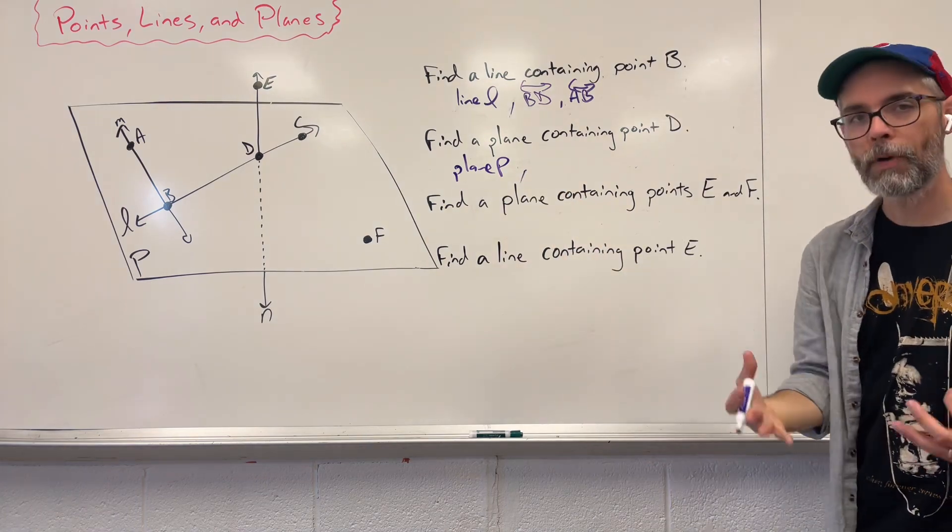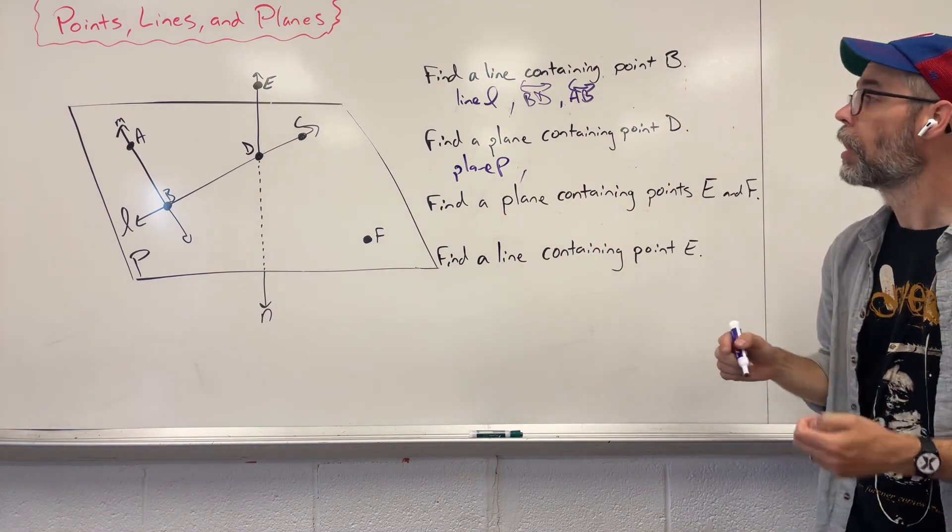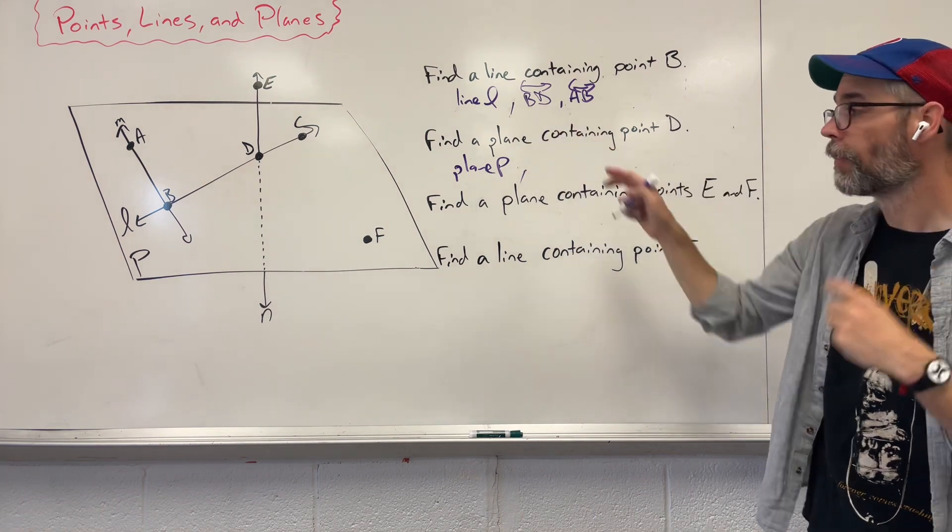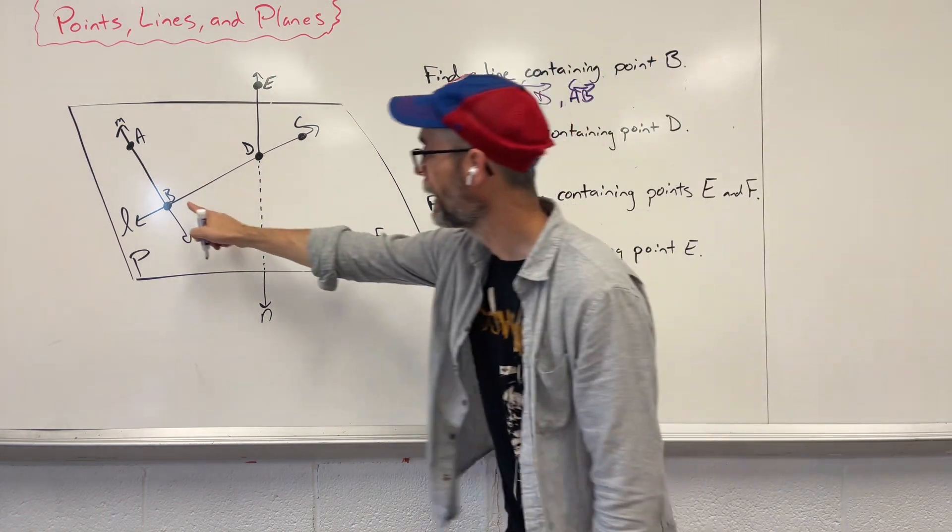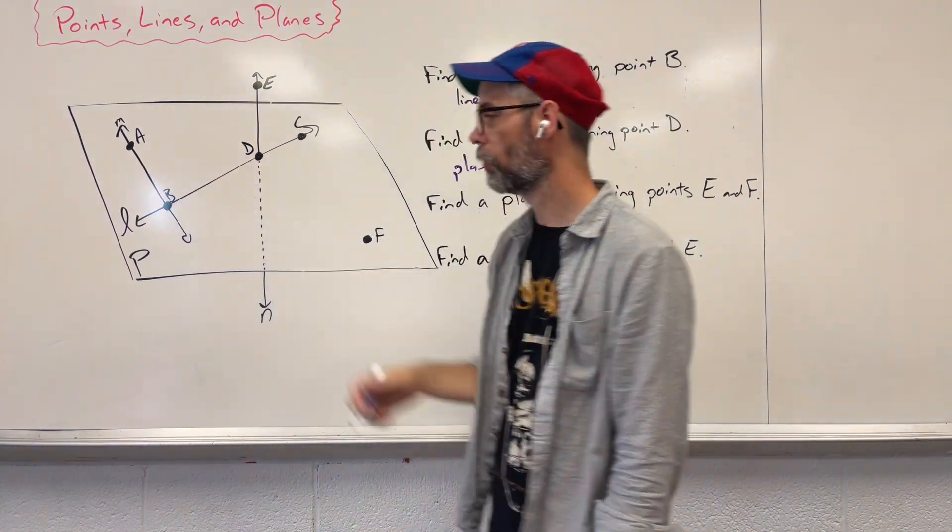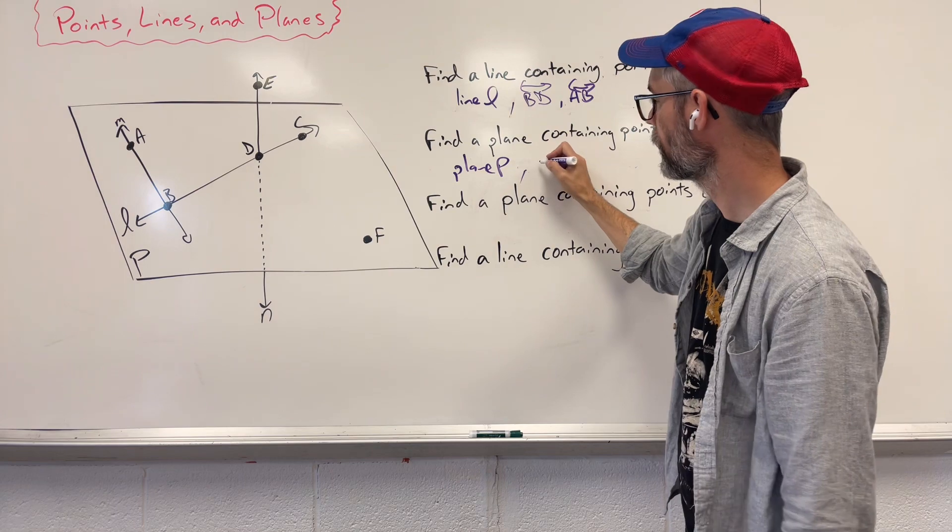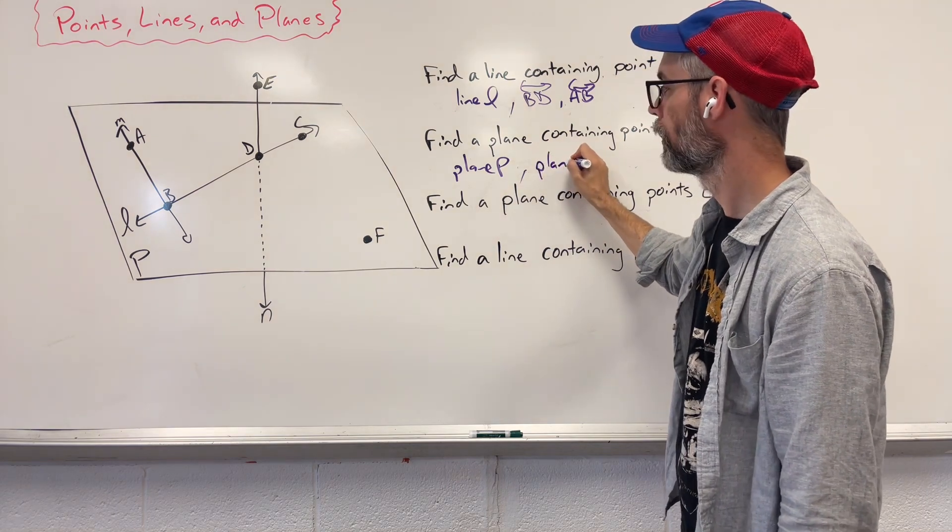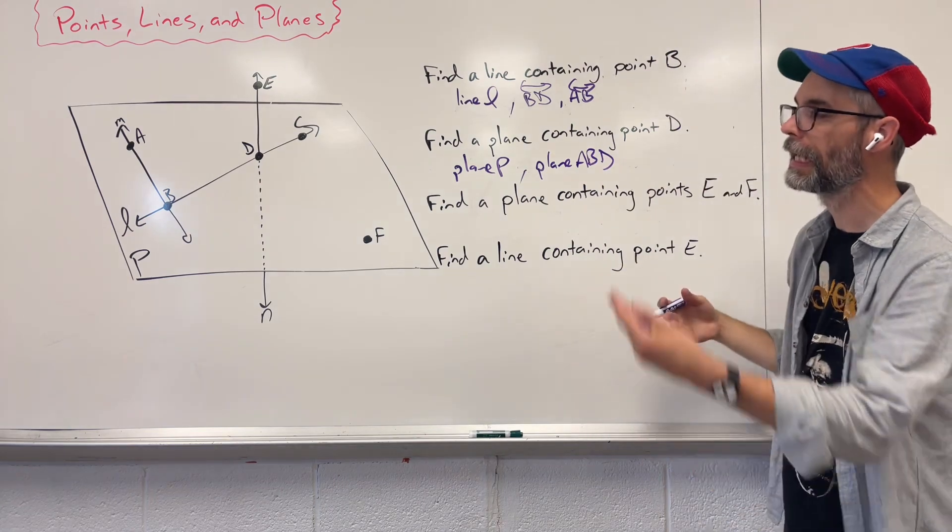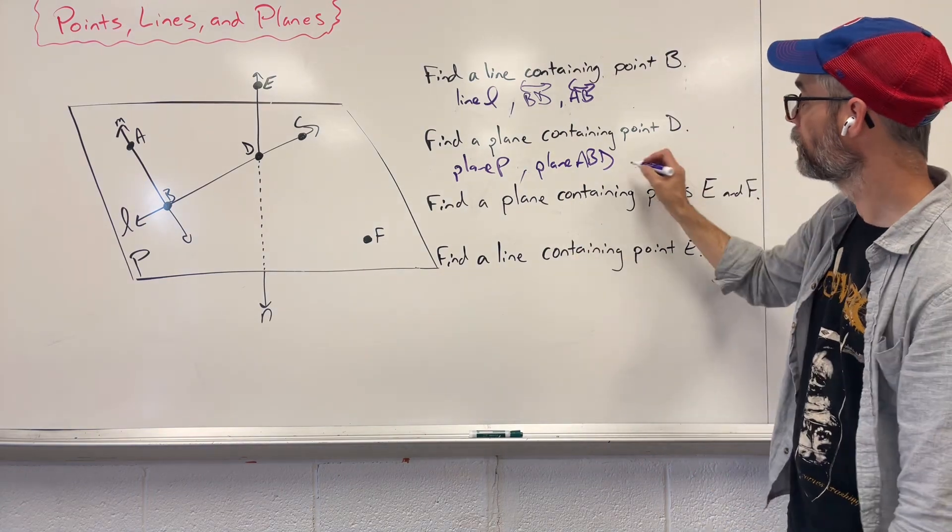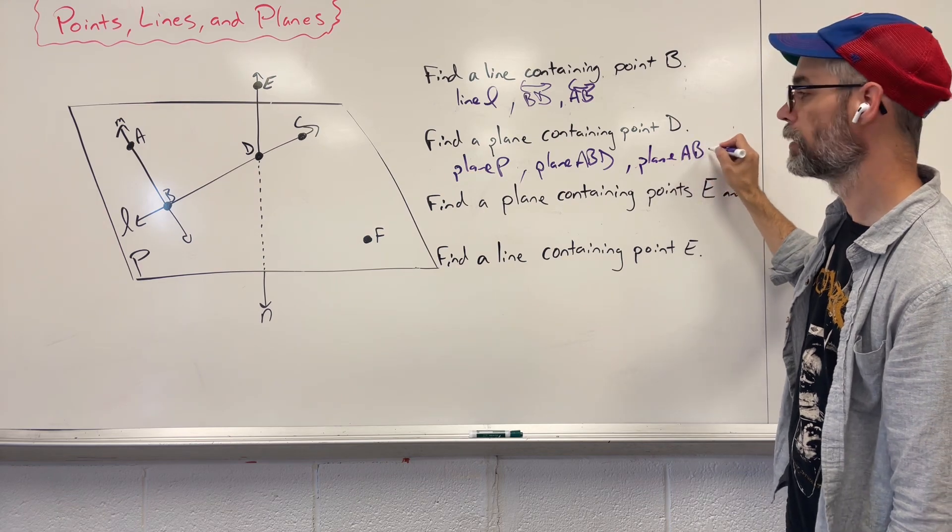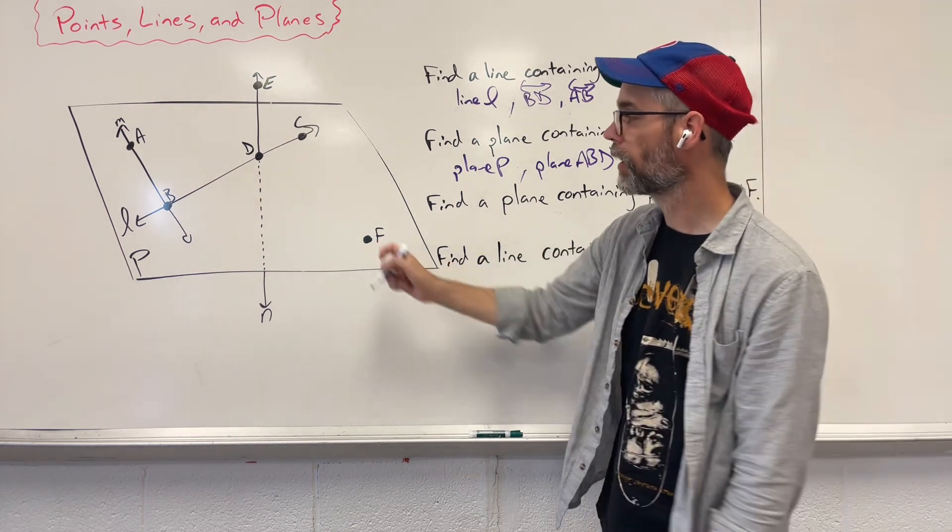In order to name a plane given points, we don't want to use two. Two gives us a line. We need three. Three will give us a plane, but they cannot be collinear. We want them to be non-collinear. So we can say plane A, B, D. We could say plane A, B, C. We could even say plane A, B, F. Take this guy all the way out here.